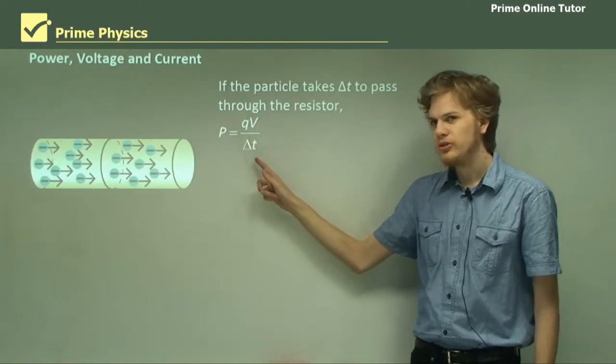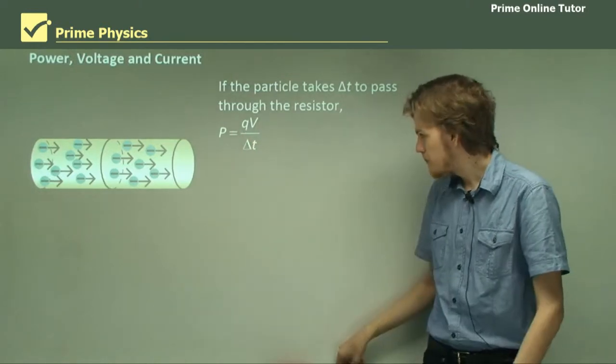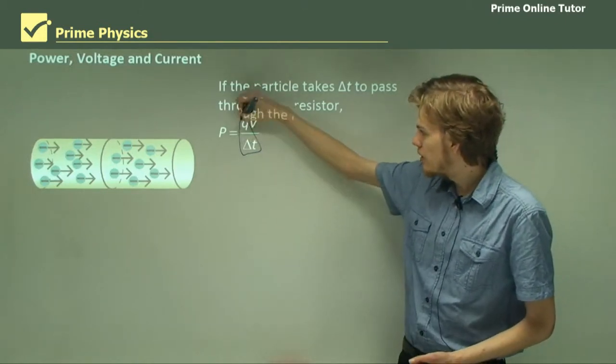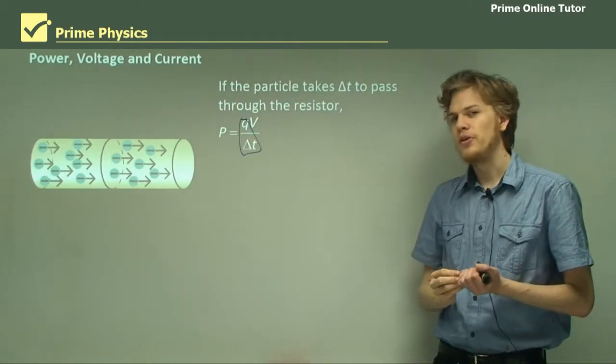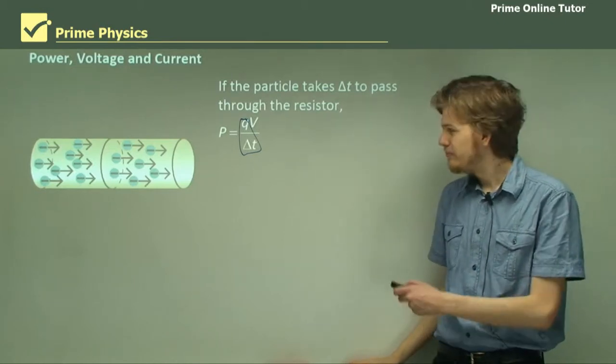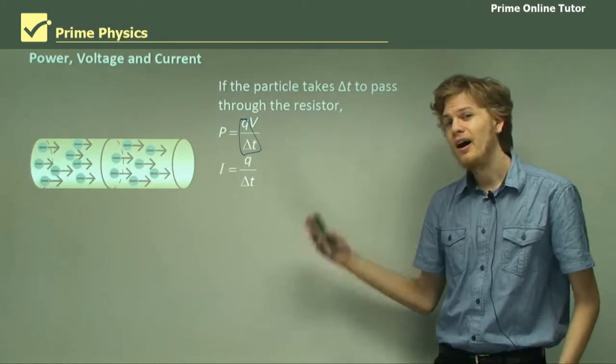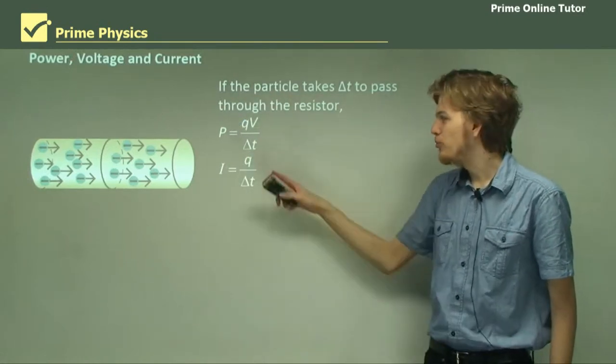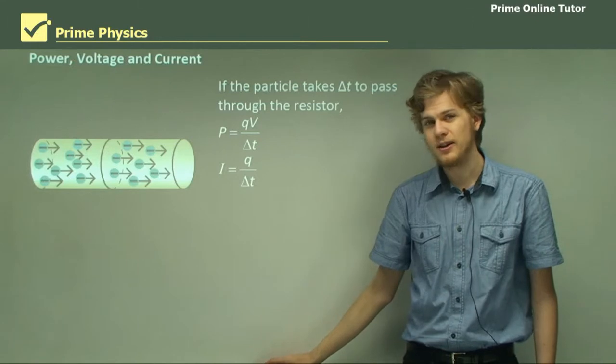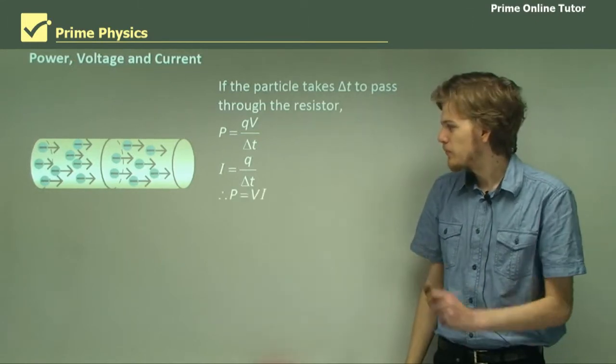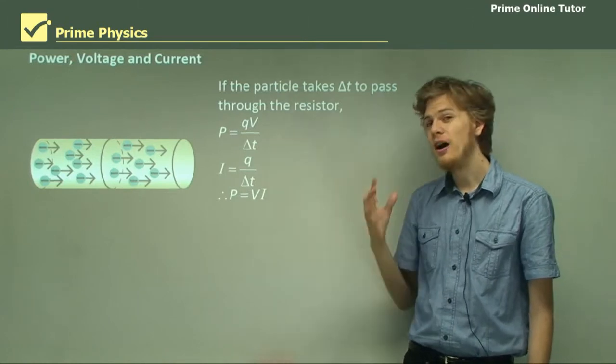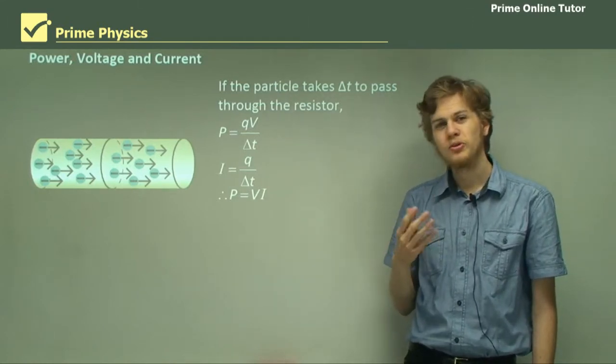But hang on a moment. Q over delta T, that looks familiar. We can take this part of the equation and substitute something else for it. Can you see what? I, the current through the resistor, equals Q over the change in time. So power will equal V times I. Very simple equation.